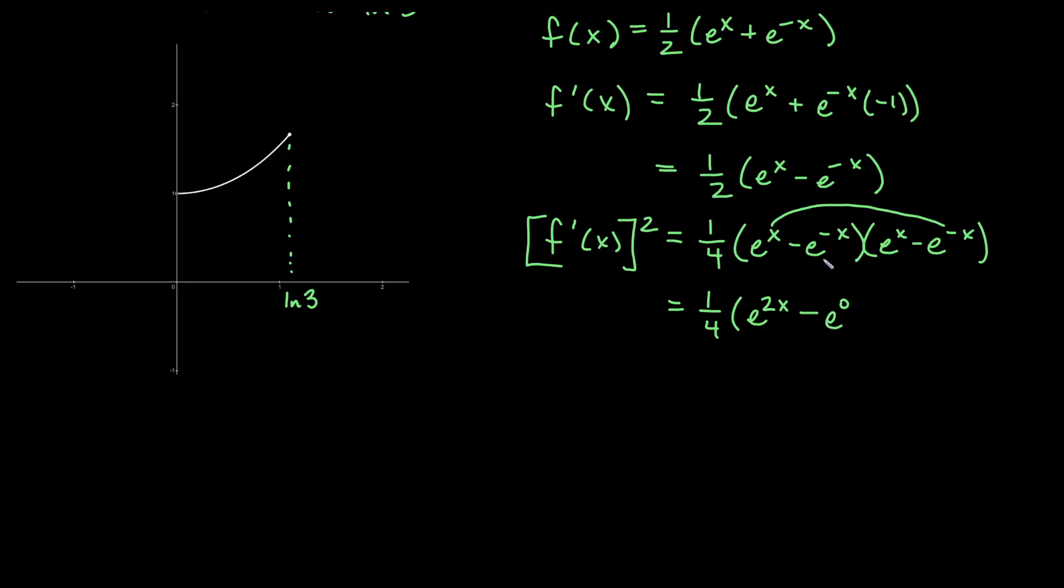And then a similar thing happens here. I get e to the x and negative e to the negative x. So I get another minus e to the 0 term. When I do my last two terms, negative and negative would become positive. And then negative x plus negative x, I would get e to the negative 2x when I distribute that.